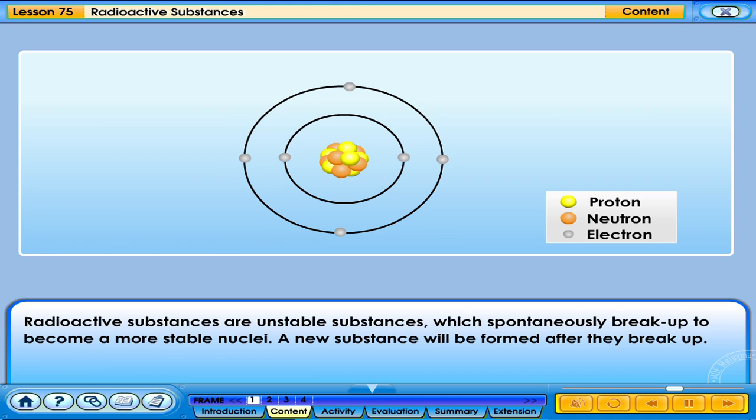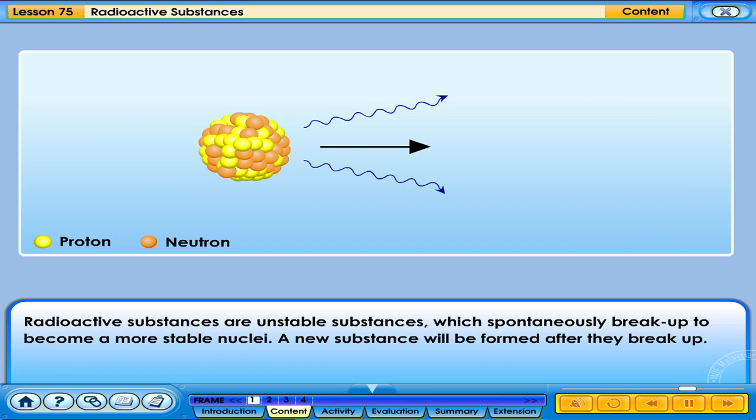Radioactive substances are unstable substances which spontaneously break up to become more stable nuclei. A new substance will be formed after they break up.